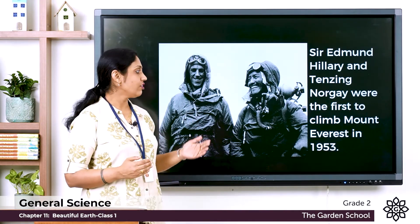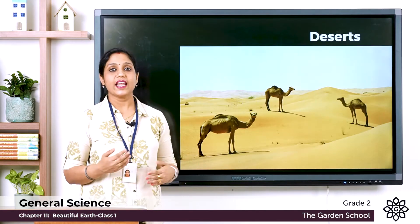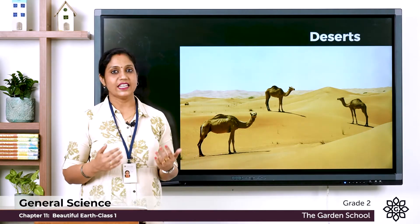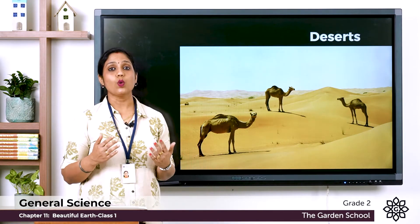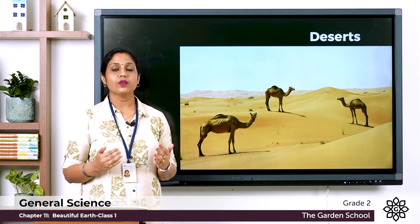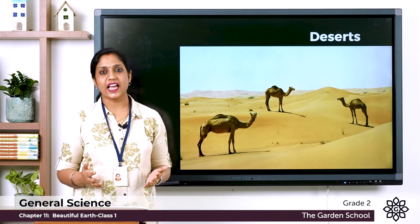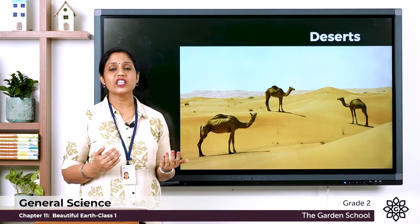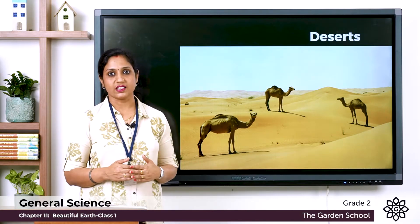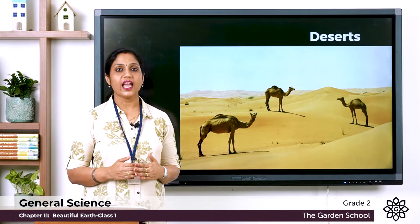Next, let's learn about deserts. A desert is a vast land which is dry. In deserts, the land is mostly covered with sand, it rains very little, and water is scarce. It is very hot during the day and cold during the night.